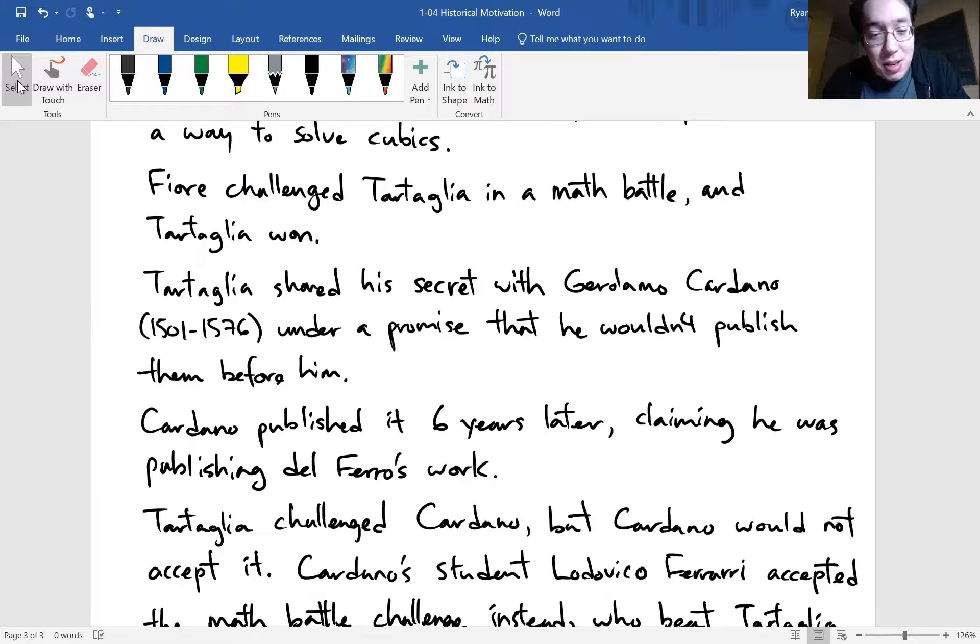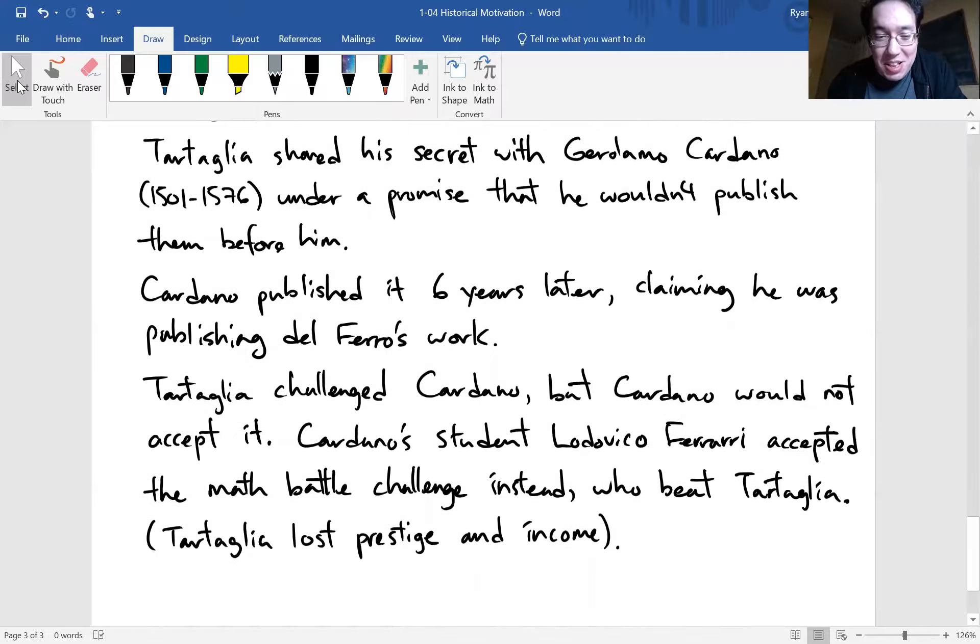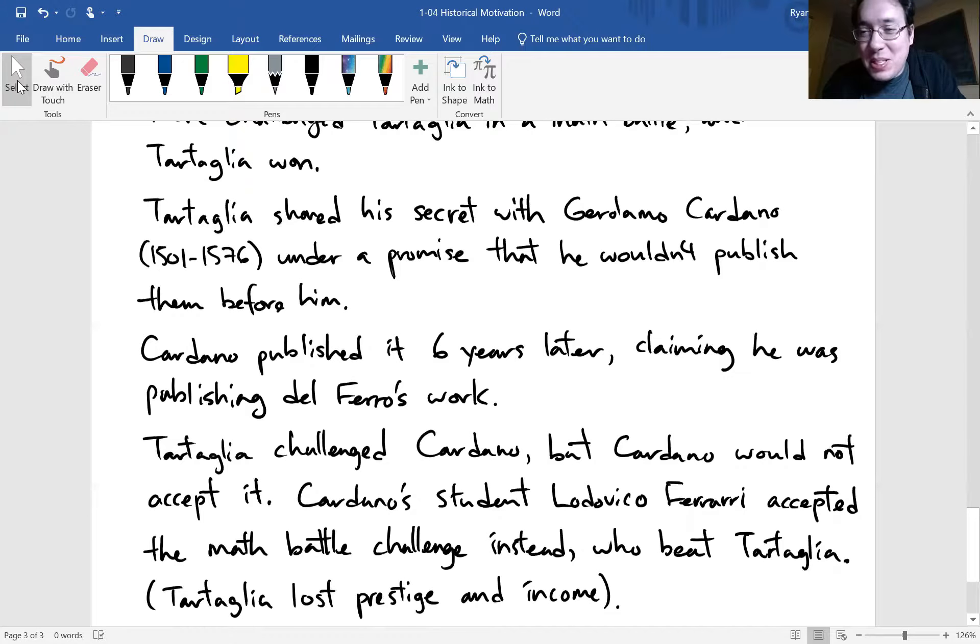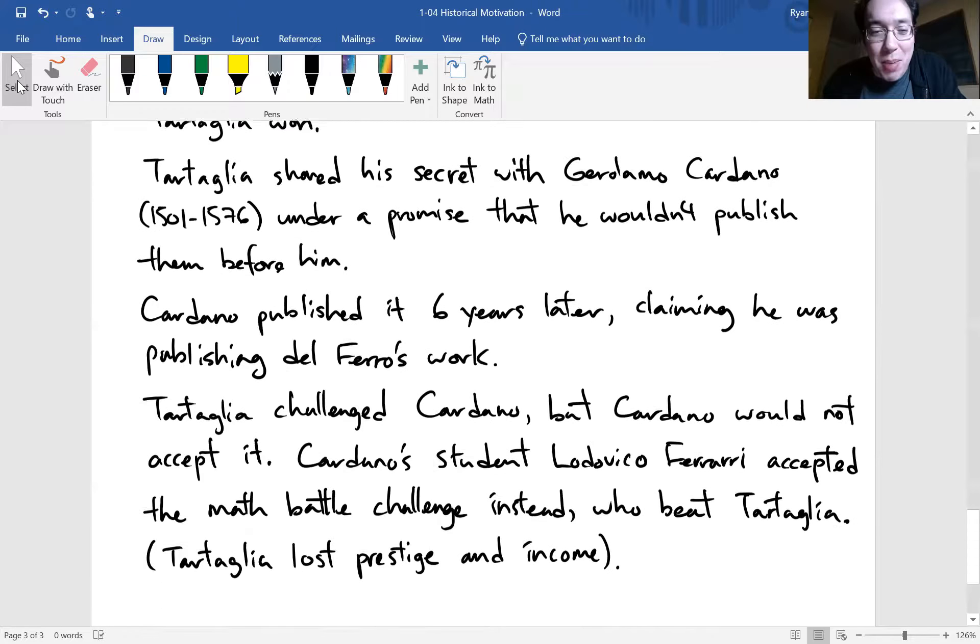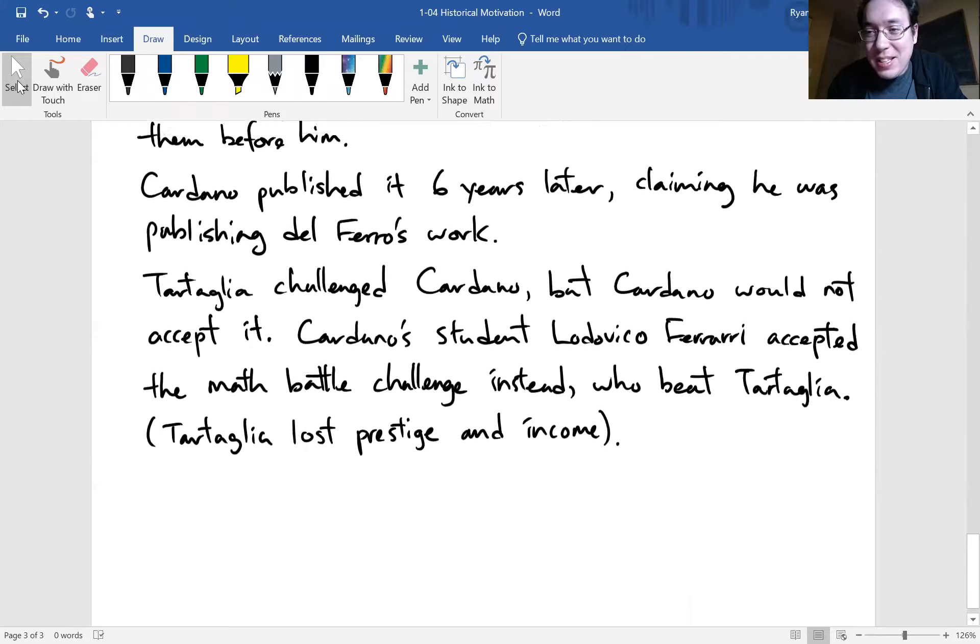Of course Tartaglia was furious. So Tartaglia challenged Cardano into a math duel. But Cardano would not accept the fight. Instead Cardano's student accepted the fight. They have a math battle and Cardano's student won. And you might be wondering like what's at stake when you have these math battles. They are putting their position at these universities online when you do these math battles. So Cardano's student won and took Tartaglia's position as a math professor. And Tartaglia lost his job, which sucks. That's how he gets repaid.